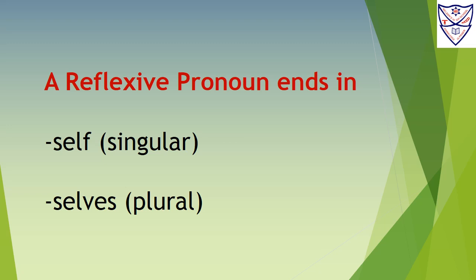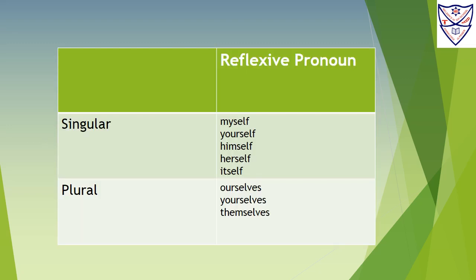What are reflexive pronouns? A reflexive pronoun ends in '-self' when we talk about something singular, or '-selves' when we talk about something plural. For singular we say: myself, yourself, himself, herself, itself. For plural we say: ourselves, yourselves, and themselves.